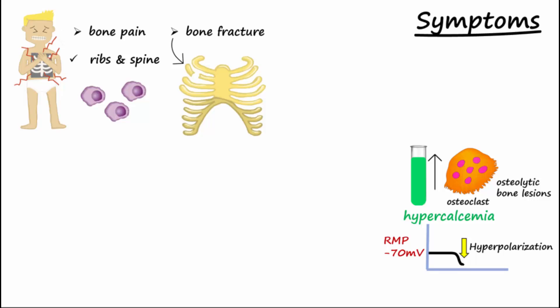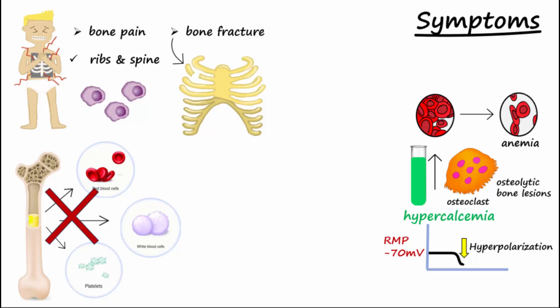Cytokines produced by the plasma cells inhibit hematopoiesis. So the number of red blood cells decreases, causing anemia. Both hypercalcemia and anemia bring about fatigue, weakness, or confusion.